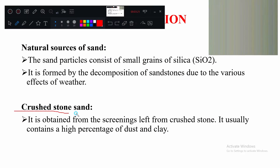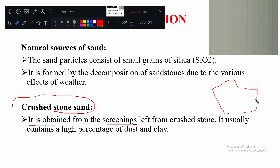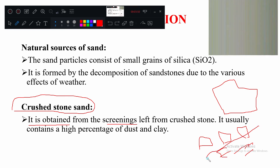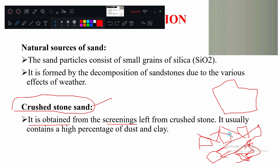Another source is crushed stone sand, obtained from the screenings of a crusher plant. Big boulders are poured into the crusher, which breaks them into smaller aggregates. In this process, very fine particles are also formed. Using screens, fine material is separated — at the bottom you get crushed stone sand, and at the top you separate the coarser aggregates.